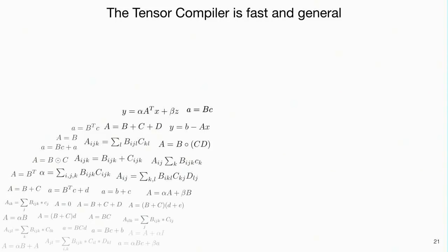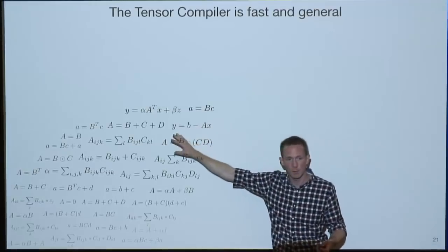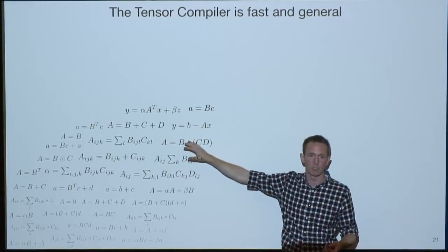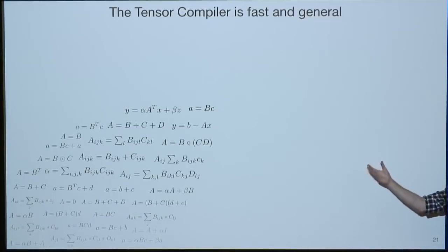There are two main stories in the results. First: there's an infinite space of tensor algebra kernels. Some have been hand-optimized; for sparse operations we match that hand-optimized performance while covering everything else. Second: there's no one-size-fits-all format. Some formats are good for some matrices, others for different ones — you need a system that provides many formats so you can shape the format to your data.